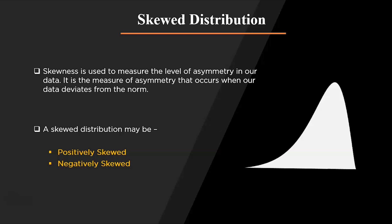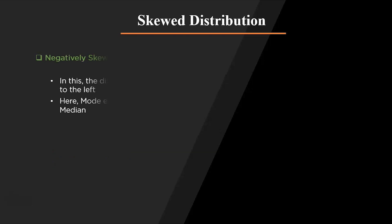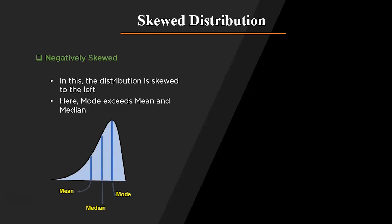In a negatively skewed distribution, the data points are more concentrated towards the right-hand side of the distribution, as you can see in the graph. This makes the mean, median, and mode bend towards the right. Hence these values are always negative in this distribution. Mode is greater than median, and median is greater than mean.